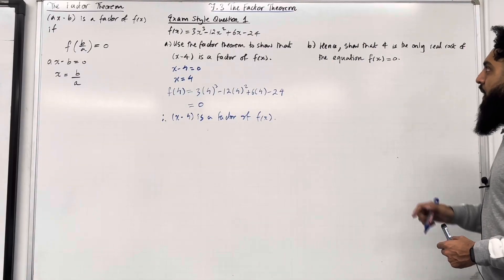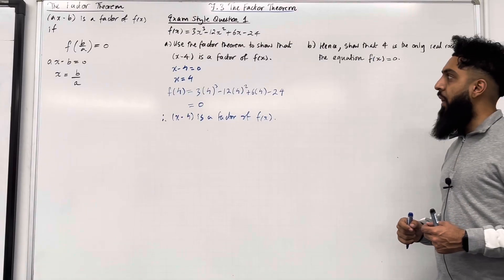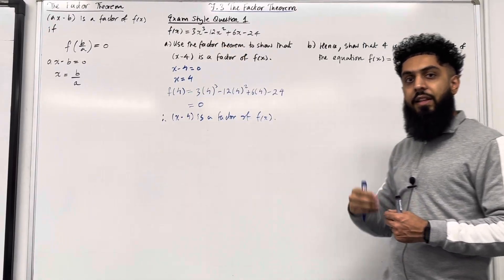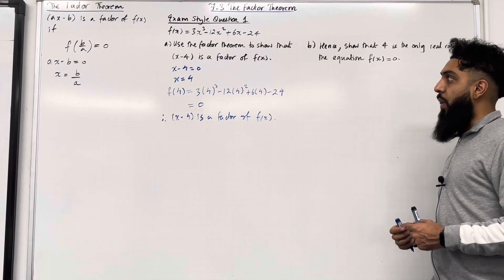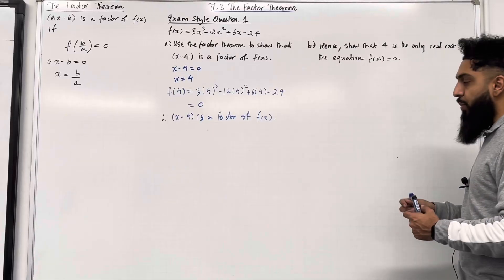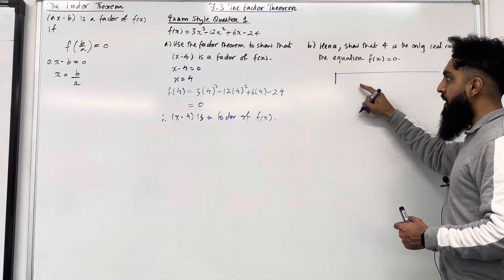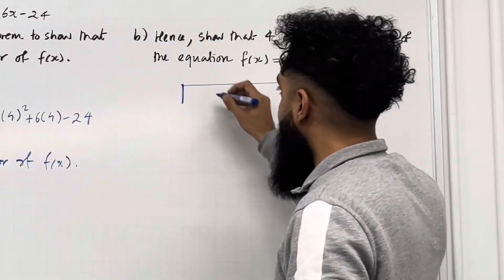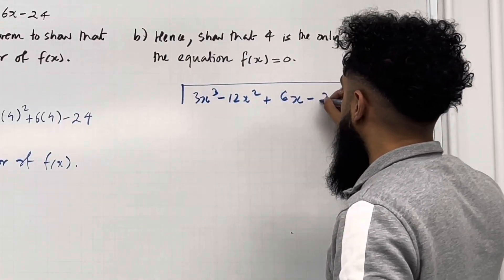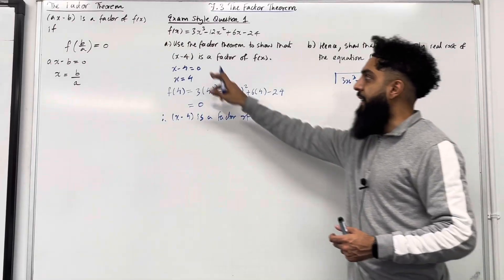Let's look at Part B. We know x − 4 is a factor of f(x). Let's find the quadratic factor of this cubic using polynomial division. Inside the bus stop I put the cubic: 3x³ − 12x² + 6x − 24. Outside the bus stop is the divisor x − 4.